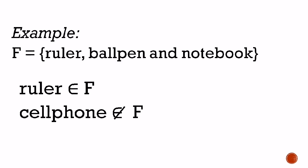Example: Set F = {ruler, ball pen, notebook} — those are school supplies. Ruler is an element of F. While cell phone is not an element of F — it does not belong to that group or set.